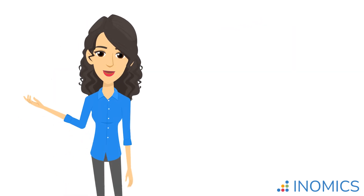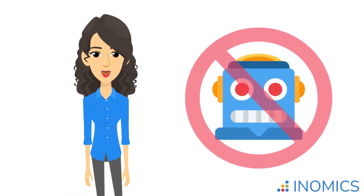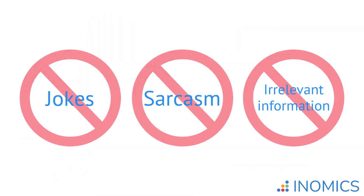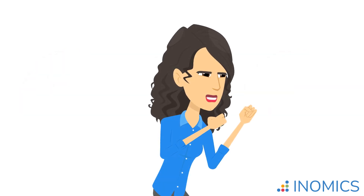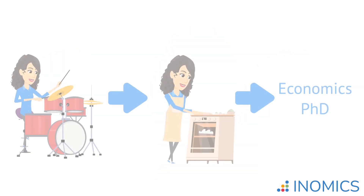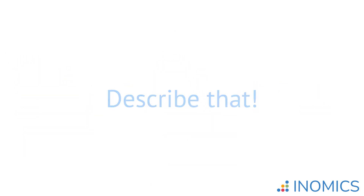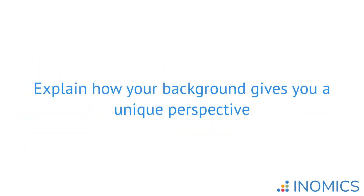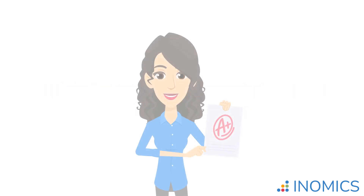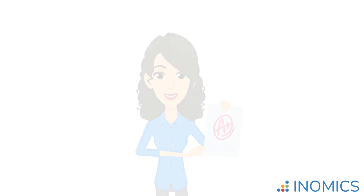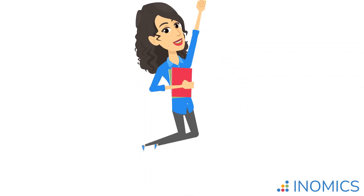And lastly, you need to strike that tricky balance of remaining professional, but not coming off as a dull, impersonal robot. While your letter should not contain jokes, sarcasm, or irrelevant personal information, if you have a strong opinion about a particular topic in economics, or perhaps you have taken an unconventional career path, describe that. Show how your background gives you a unique perspective. Remember, the point of a motivation letter is not to show how similar you are to an imagined perfect candidate — it's to show off your unique personal approach and how you would be a great PhD student.